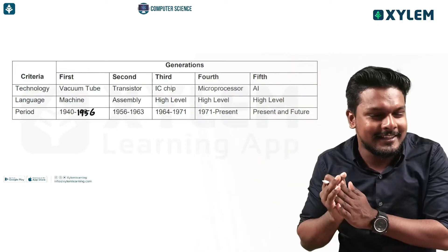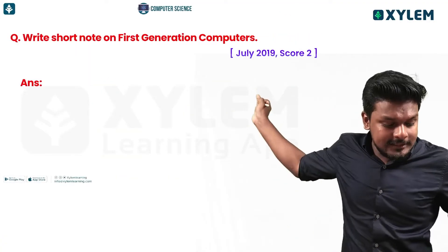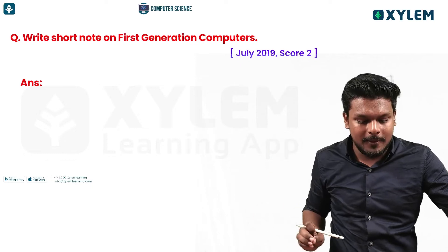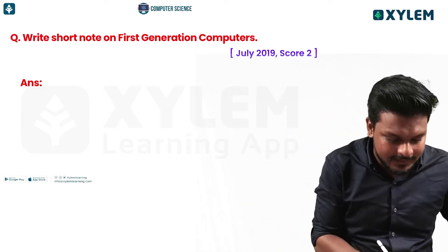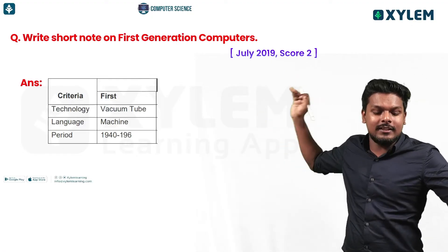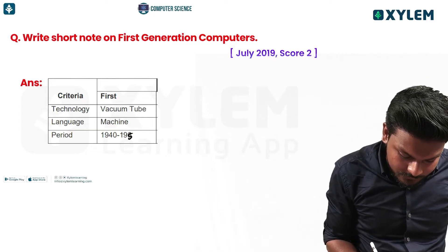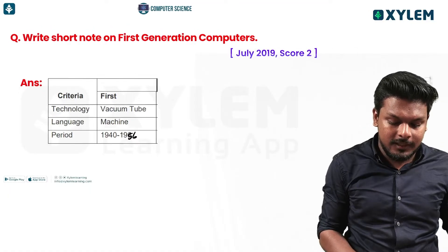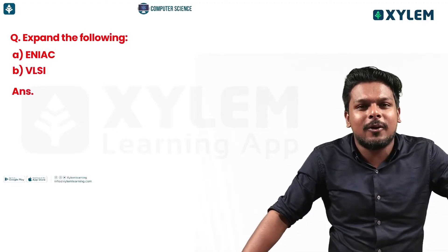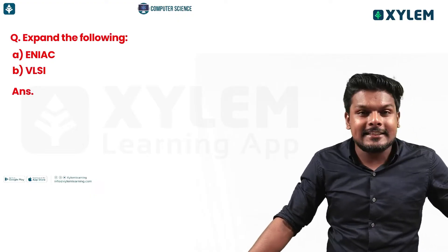Write a short note on first generation computers: technology, language, time period — 1956. Next, expand the following abbreviations: VLSI and ENIAC.